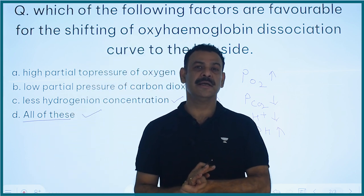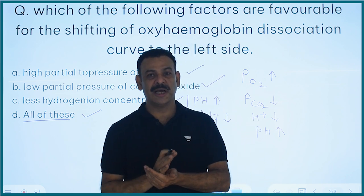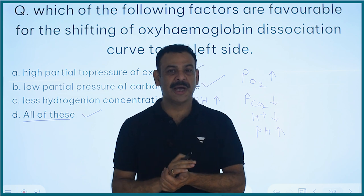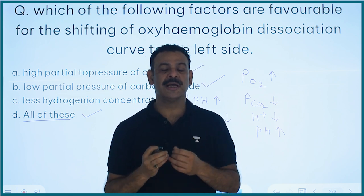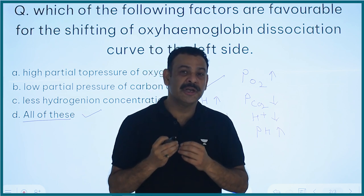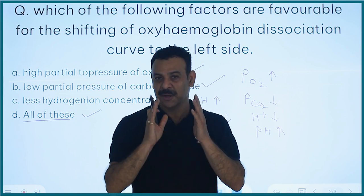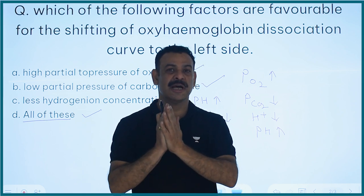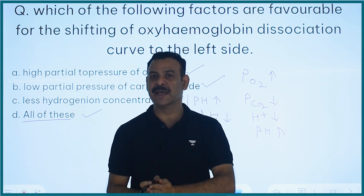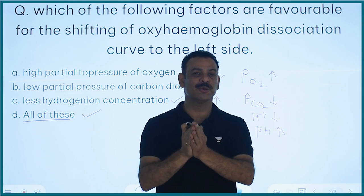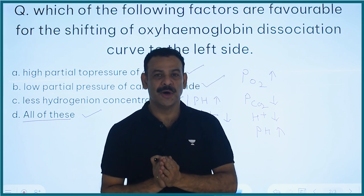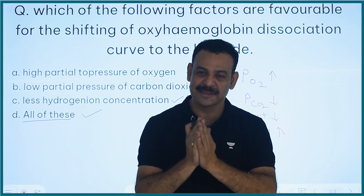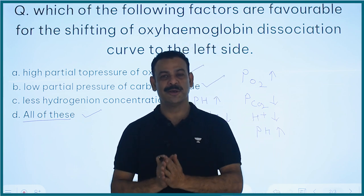So remember: whenever you are asked that the curve will shift to the left side, you should understand that hemoglobin has more affinity for oxygen and oxyhemoglobin formation will also occur whenever the curve shifts to the left side. I will keep bringing such exam-oriented questions, and we will keep preparing for NEET 2025 in this way. Thank you so much.